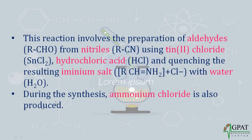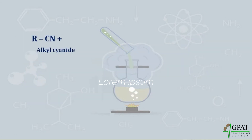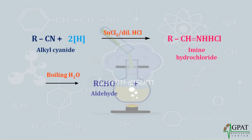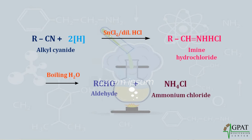During the synthesis, ammonium chloride is produced. Let's discuss the mechanism. The alkyl nitrile on reduction with hydrogen in the presence of stannous chloride and diluted HCl forms imine hydrochloride, which is the intermediate product. On hydrolysis with boiling water, this imine hydrochloride further forms aldehyde, with ammonium chloride as the additional side product.